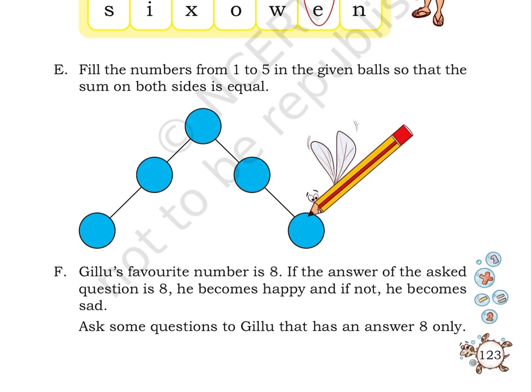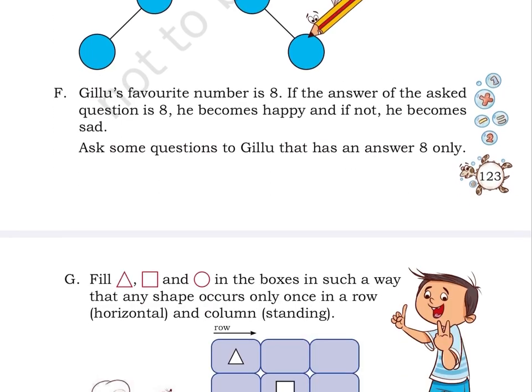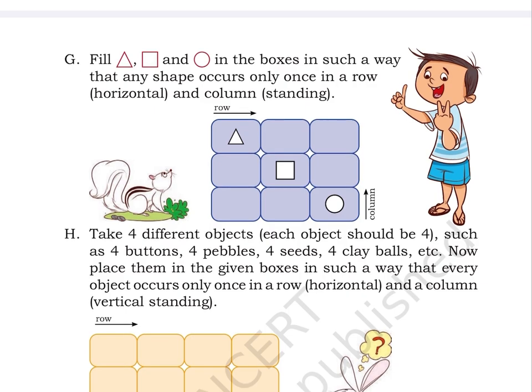Page number 124. Puzzle G: Fill triangle, square and circle in the boxes in such a way that any shape occurs only once in a row, horizontal, and column, that is, standing. Here, we have 9 boxes. Each row has 3 boxes and each column also has 3 boxes. In the first row, the first column has a triangle. In the second row, the second column has a square. In the third row, the third column has a circle. The other boxes are blank.